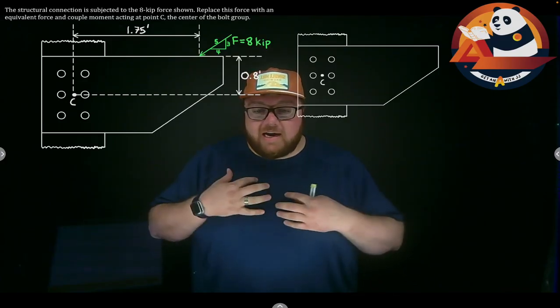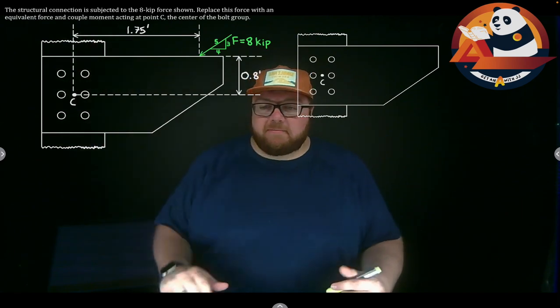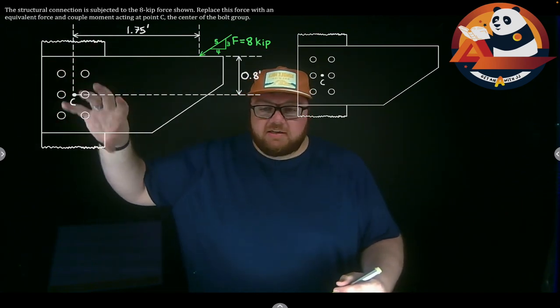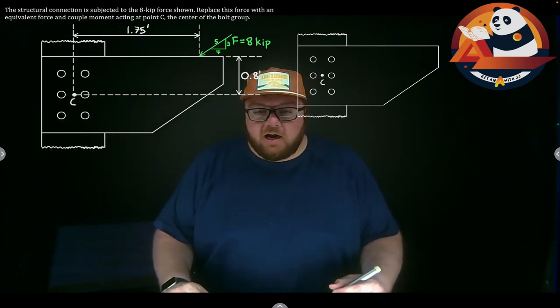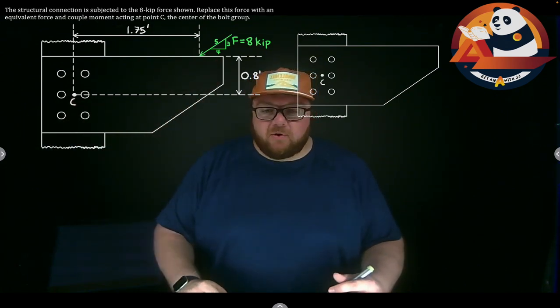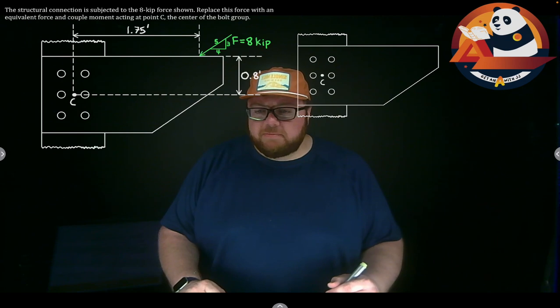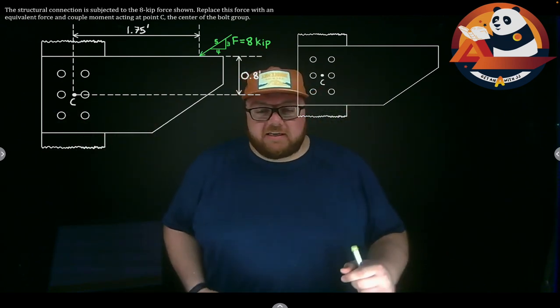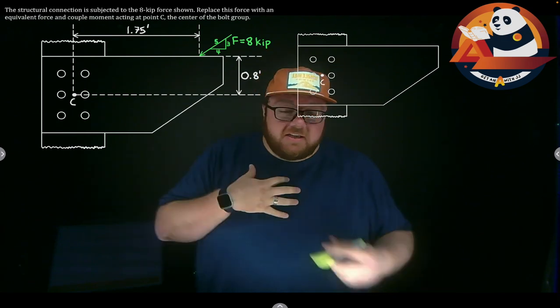Alright, welcome everyone. I am JJ. Let's tackle an example problem. We have a structural connection here with six bolts centered at point C subjected to an eight kip force as shown. Let's replace that with an equivalent force and couple moment at point C. First off, a lot of times this is where